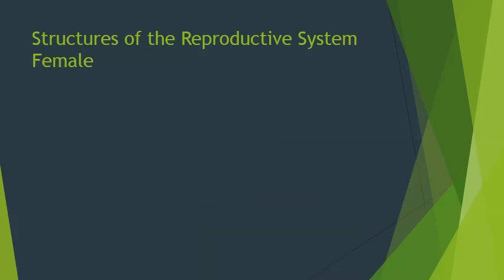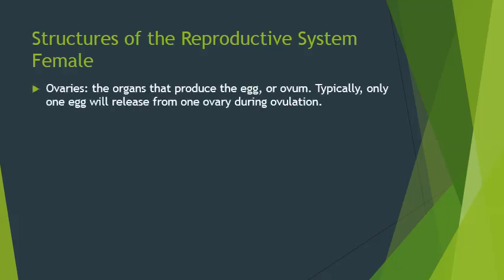Now we'll switch over to examine the structures of the female reproductive system. Examine your diagram as we go — you're also going to need to add a label. The ovaries, the oval-shaped objects on your diagram, produce the eggs. Through the ovulation cycle, they prepare and release one egg every month. Label the ovaries.